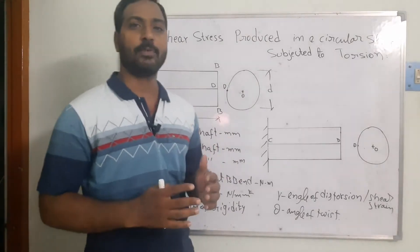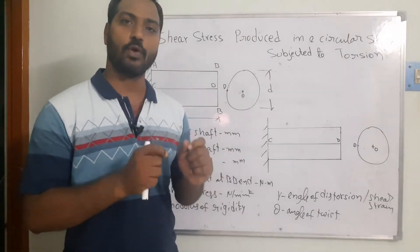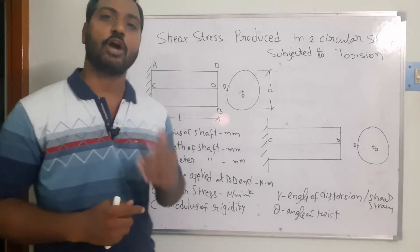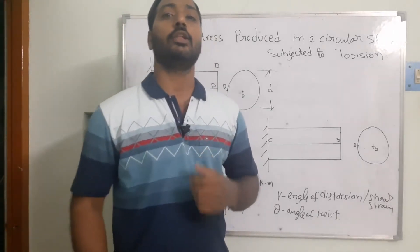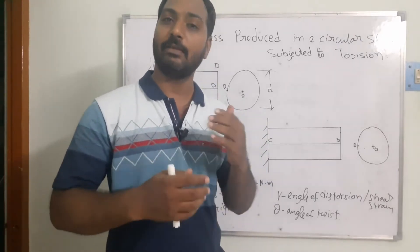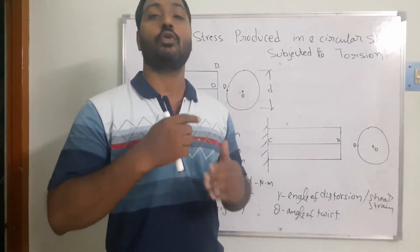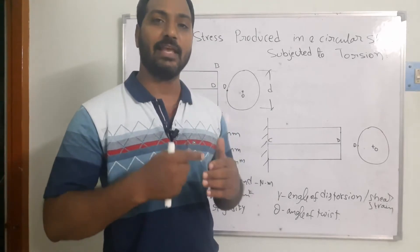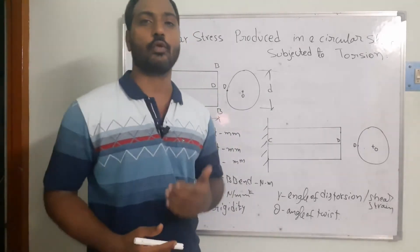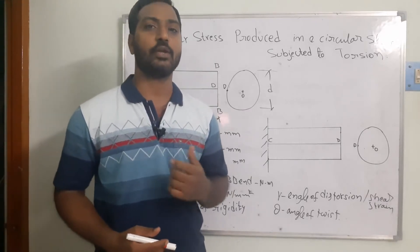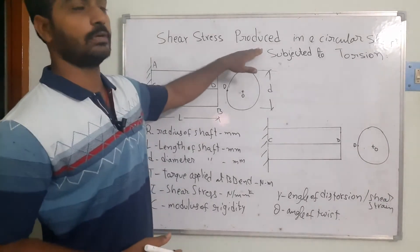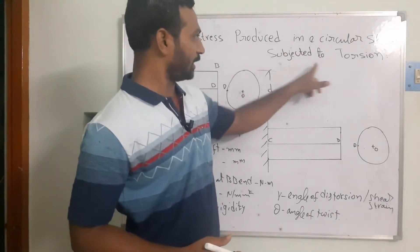The main purpose of a shaft is to transmit power from one unit to another. In that process, the shaft is subjected to torque. Because of this torque, the material starts to rotate in a circular shape and is subjected to torsional forces, generating shear stresses. We need to find the magnitude of those shear stresses produced in a circular shaft subjected to torsion.